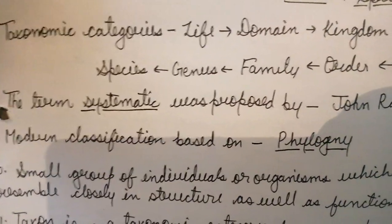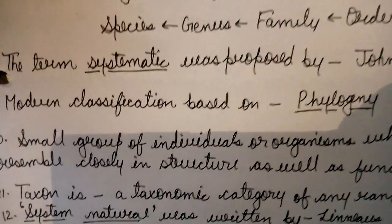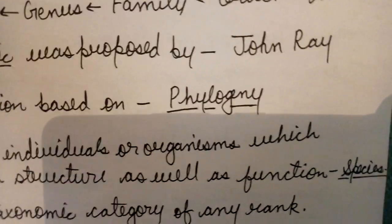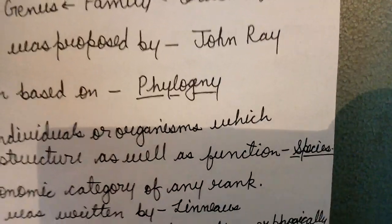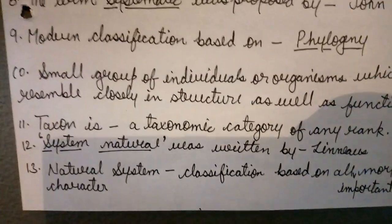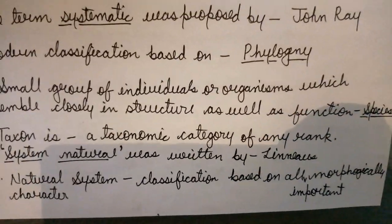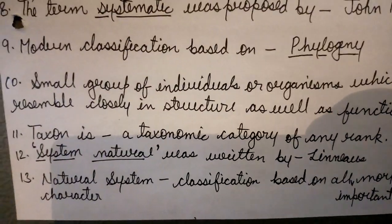A small group of individual organisms which resemble each other closely in structure as well as function is called species. Taxon is a taxonomic category of any rank.